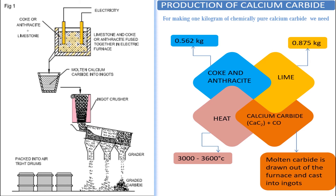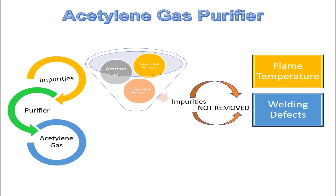Molten carbide is drawn out of the furnace and cast into ingots. The ingots are crushed into different sizes and packed in airtight steel drums. The generated acetylene gas has impurities. If these impurities are not removed, harmful effects may occur: first, reduction in flame temperature; second, reaction with metal, influencing welding defects like blowholes and porosity.